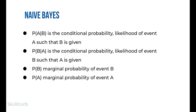Looking at the Bayes formula in detail: P(A|B) is the conditional probability — likelihood of event A given B. P(B|A) is the conditional probability — likelihood of event B given A. P(B) is the marginal probability of event B, and P(A) is the marginal probability of event A.